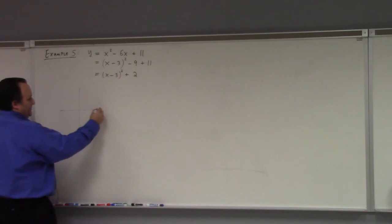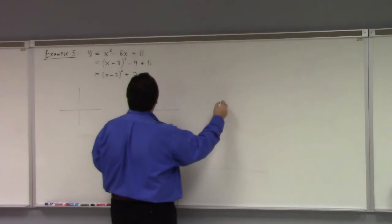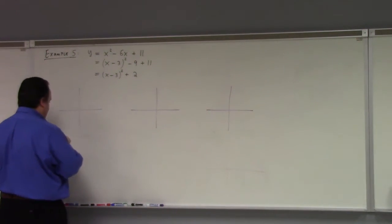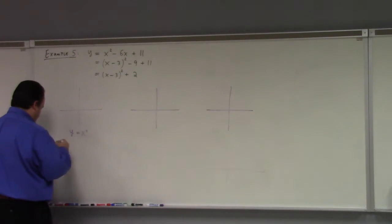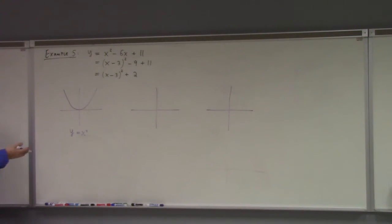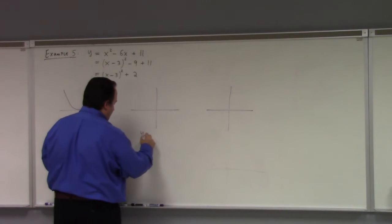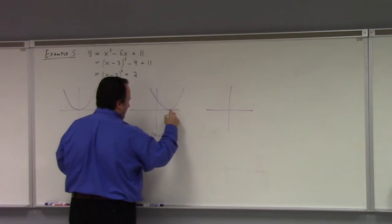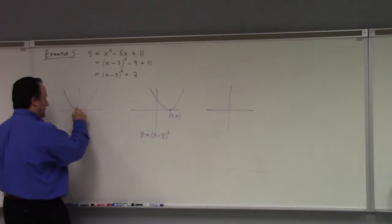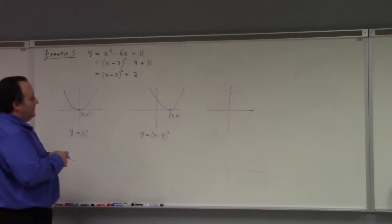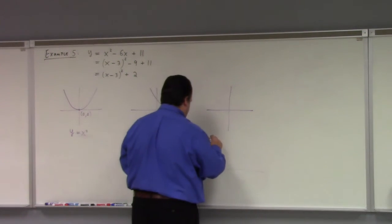And so what's going on here? I'll draw the steps. I think I can do this in three steps. So we start with y = x². What's that look like? That's just this guy, right? Then I shift 3 units to the right. So that's like this. So my vertex is now at (3, 0). It was originally at (0, 0). And then I shift up 2.